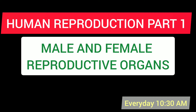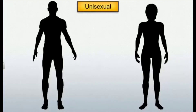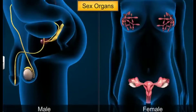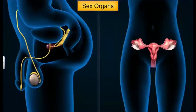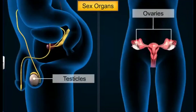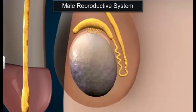Without wasting any time, let's begin our first lecture. Humans are unisexual and viviparous. The major reproductive organs include the external genitalia like the penis in males and vulva in females, along with a number of internal organs including the gamete-producing gonads like the testicles in males and the ovaries in females. Let us learn about the organs of the male reproductive system first.